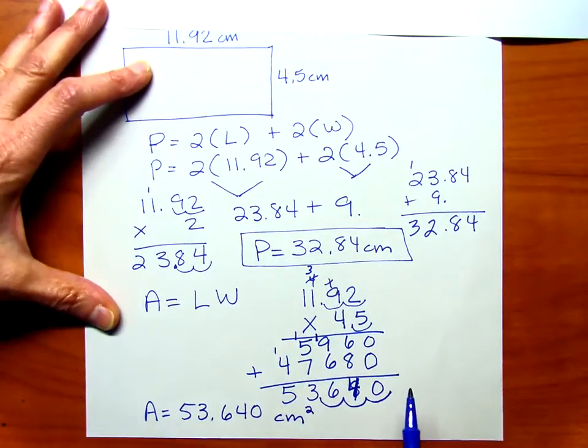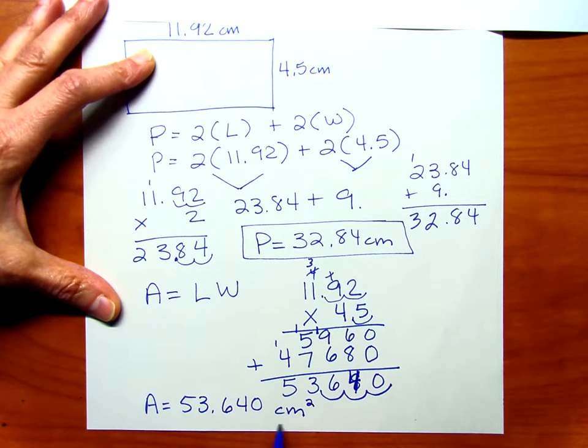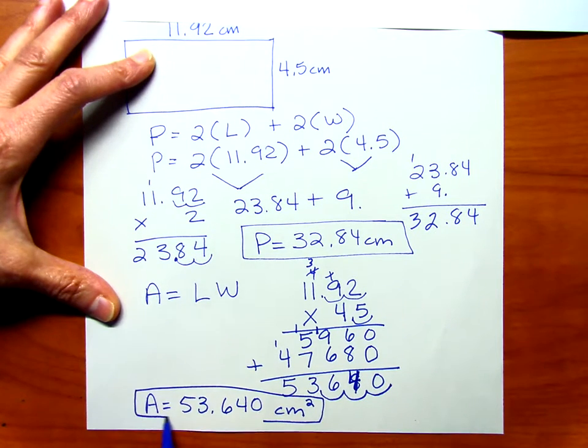Area is a two-dimensional form of measurement, so we need to show that second dimension by putting an exponent 2 in our unit of measurement.